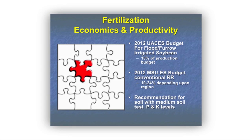Fertilization economics: a couple years ago in 2007 we fell on hard times and fertilizer prices went through the roof. In 2012, the University of Arkansas Extension Service found that for flood and furrow irrigated soybeans, fertilization with P and K resulted in 18% of the direct production budget. In Mississippi, the Extension Service budget for conventional soybeans in a Roundup Ready system put that fertilizer budget at 10 to 24% of total direct expense.